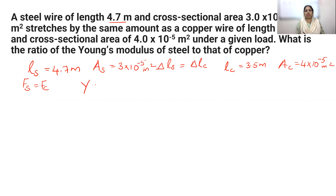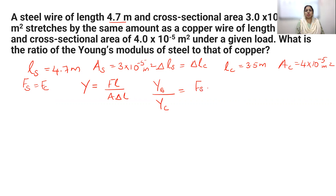Young's modulus Y is equal to F L divided by A into delta L. Young's modulus of steel divided by Young's modulus of copper means F_S into L_S divided by A_S into delta L_S, multiplied by the reciprocal: delta L_C into A_C divided by F_C into L_C.